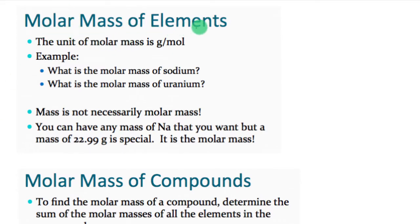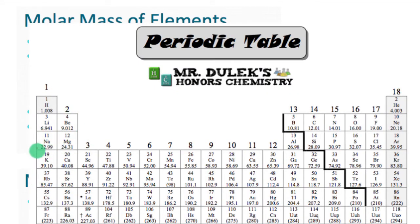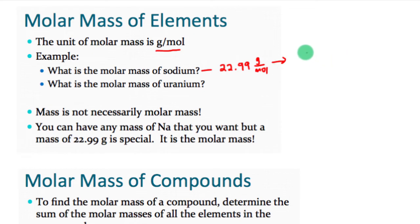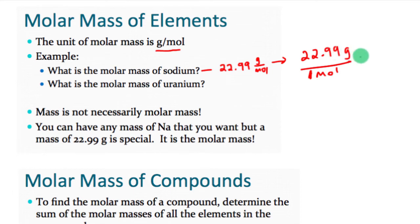To get the molar mass of elements, the unit is grams per mole. If we're looking for the molar mass of sodium, we go to the periodic table and find sodium at 22.99. So the molar mass of sodium is 22.99 grams per mole. That means 22.99 grams is equivalent to one mole of material — by definition, one mole has this mass for sodium.